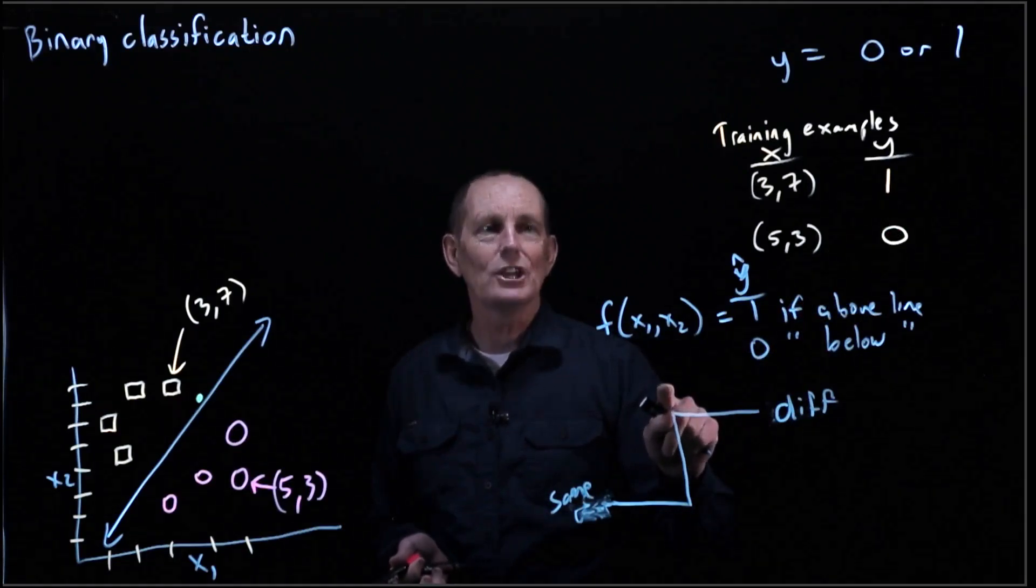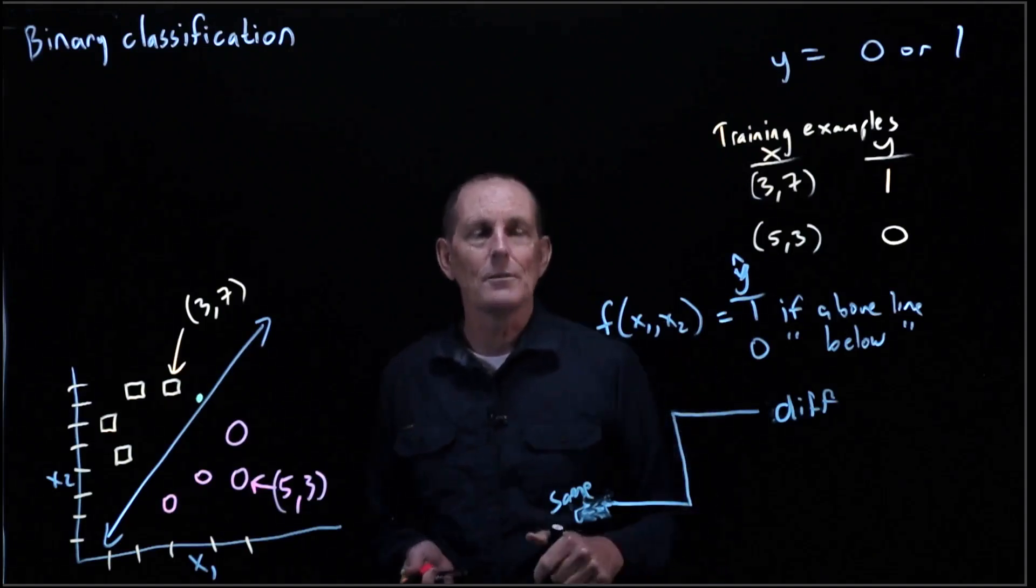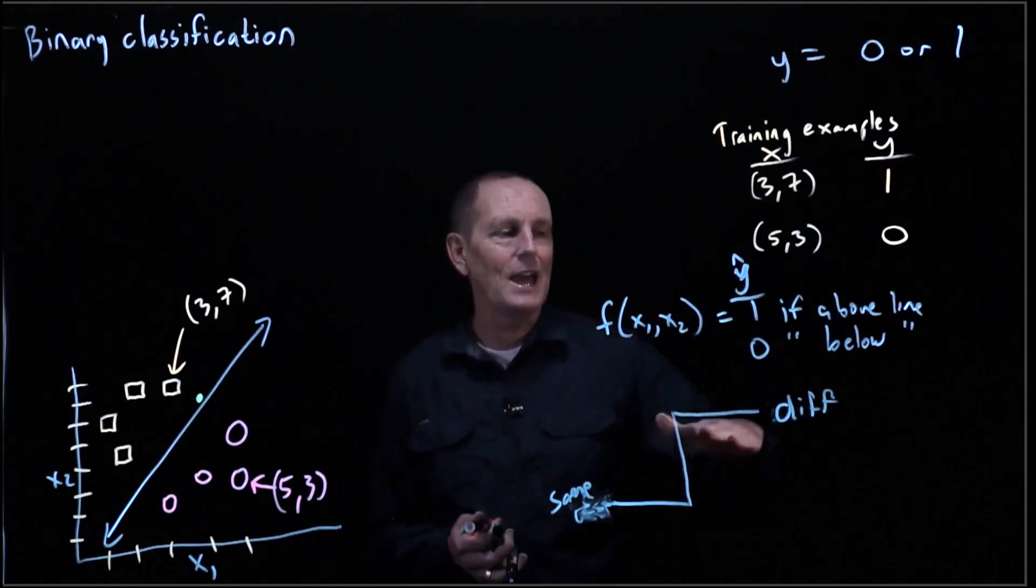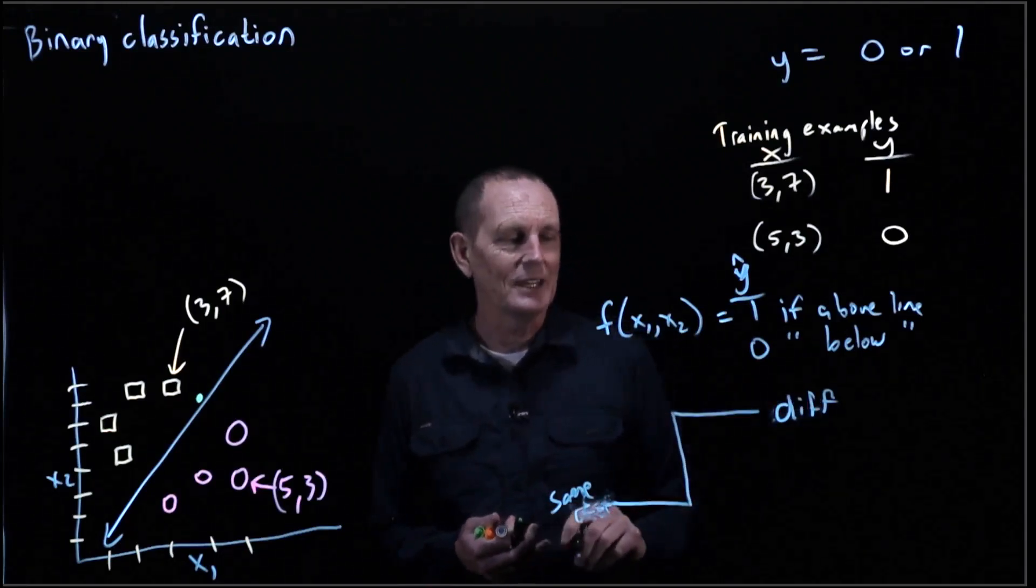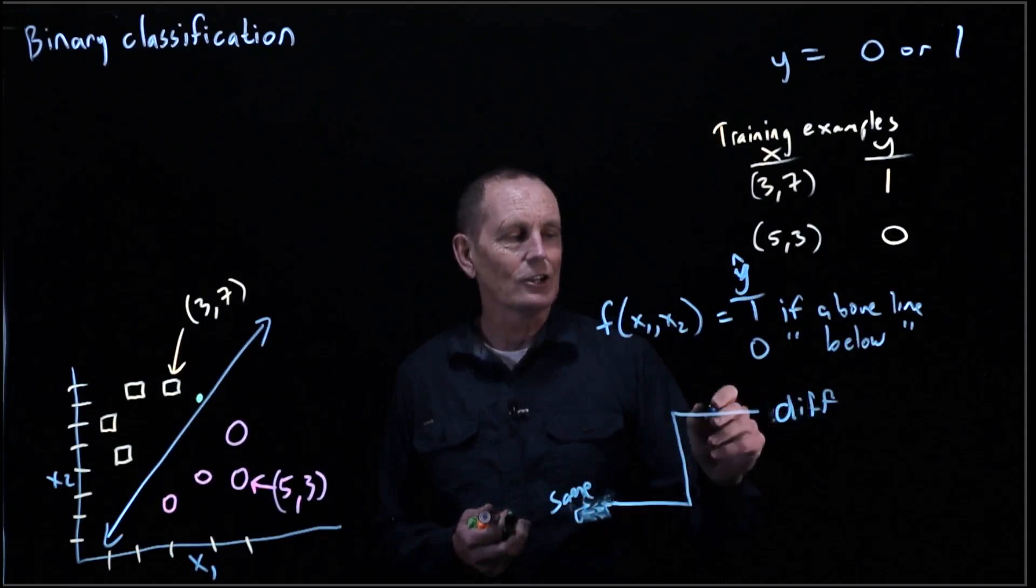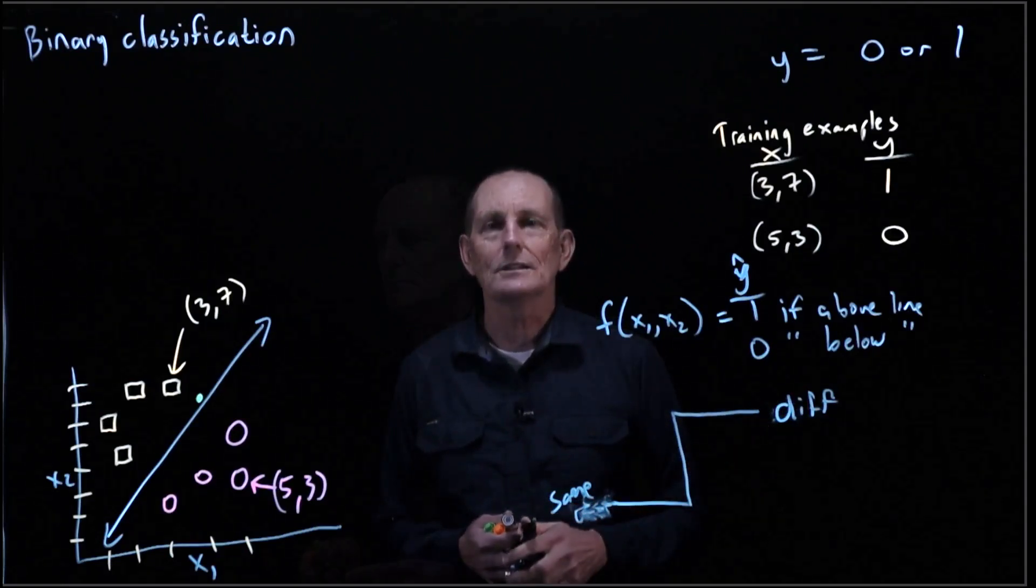Well, the problem with that is we can't really do a gradient descent when we've got this flat thing like this. We would rather have something, a loss that is a curve that is differentiable so we can actually see what the gradient is.